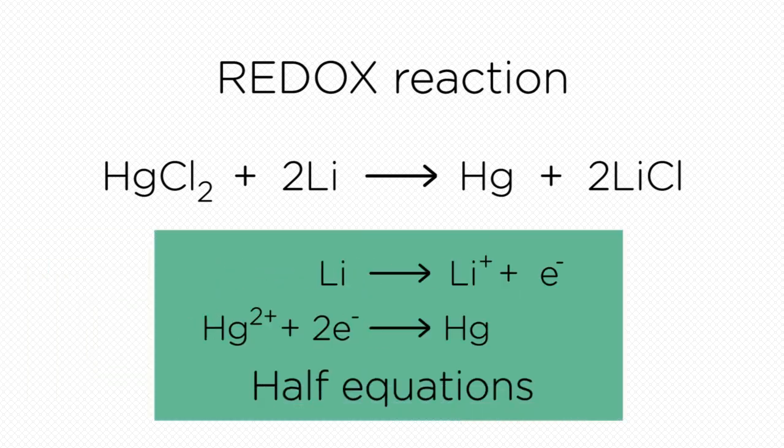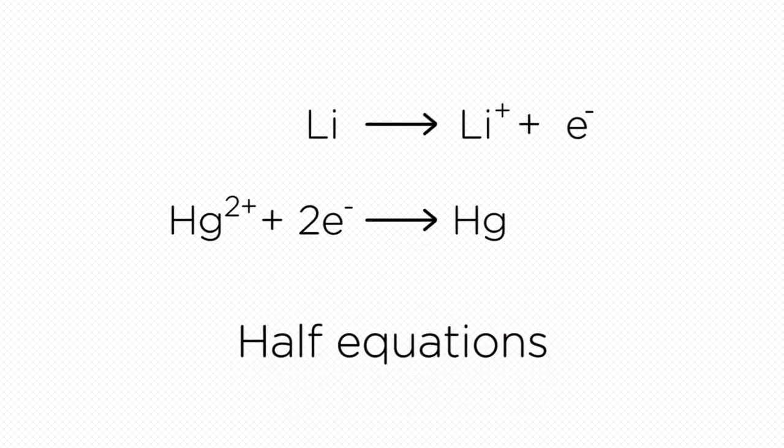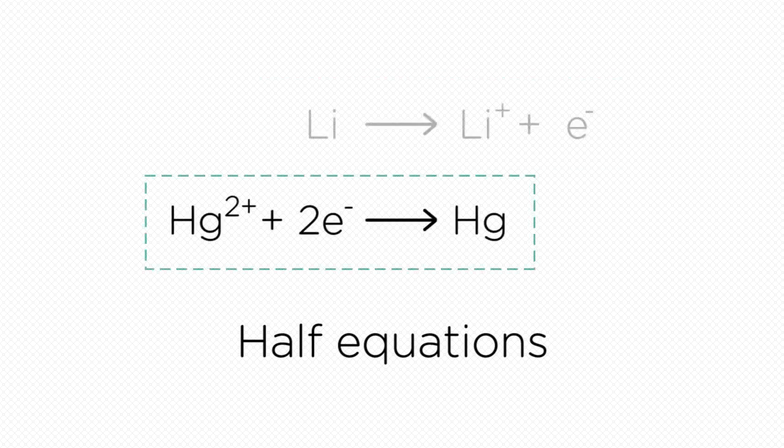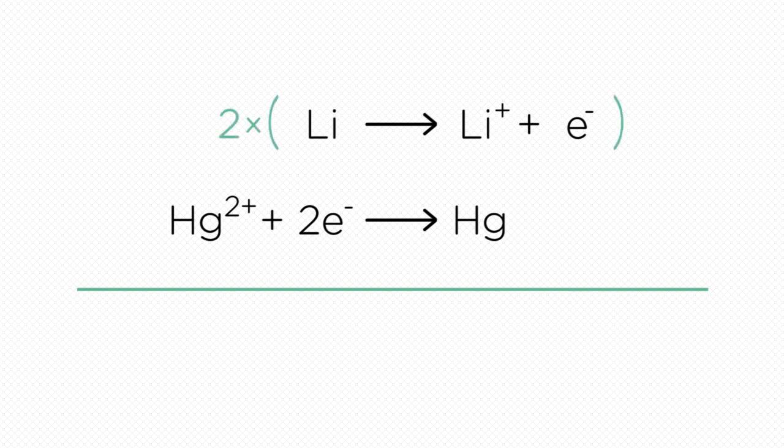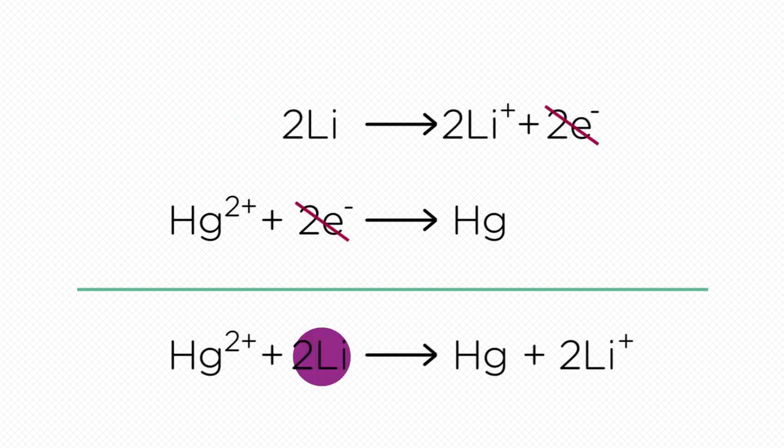These are known as half equations. Only one ion is shown and seemingly electrons appear. Half equations are an easy way of looking at what happens to one component at a time. Joining two half equations together and balancing charge eliminates the electrons. This balanced equation needs two lithium species for every mercury.